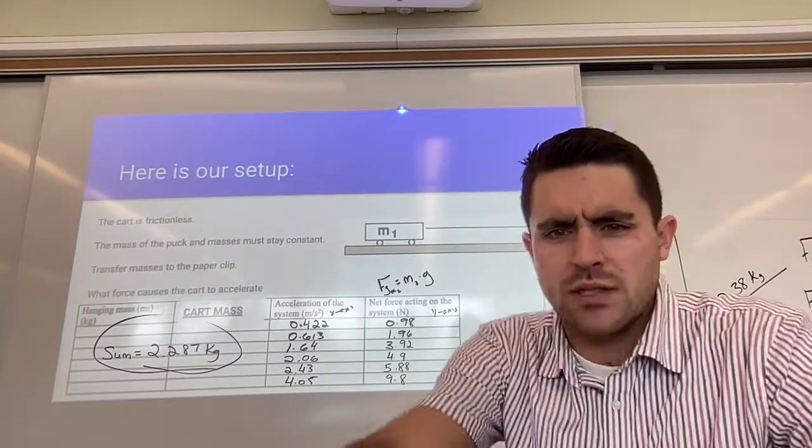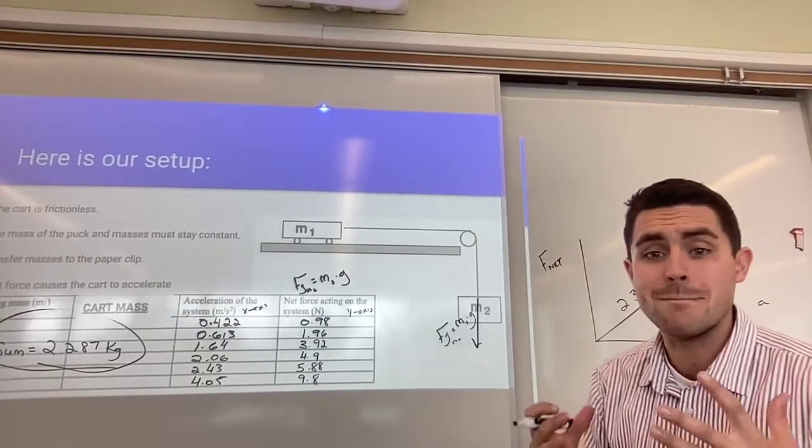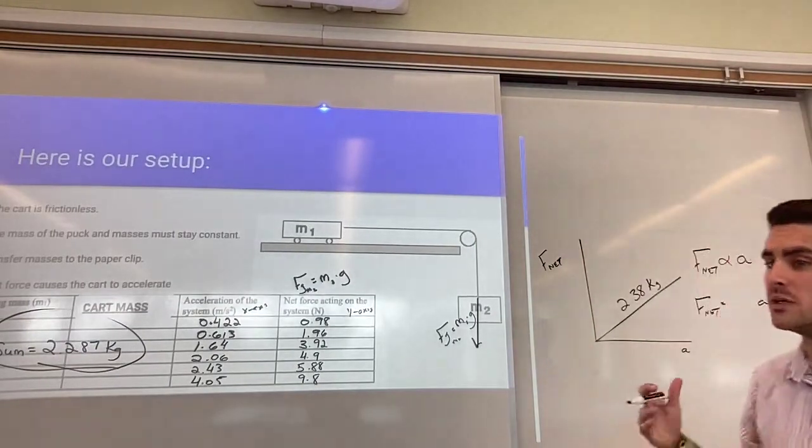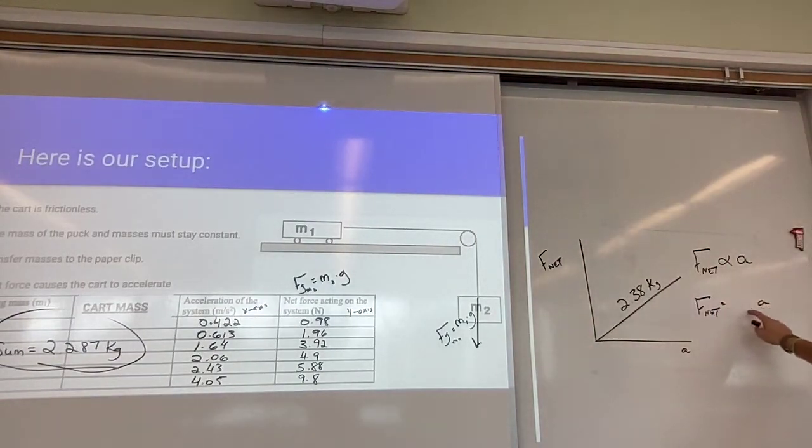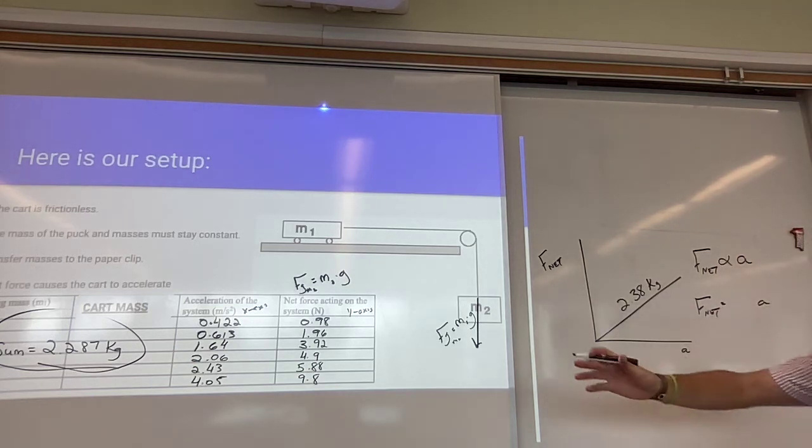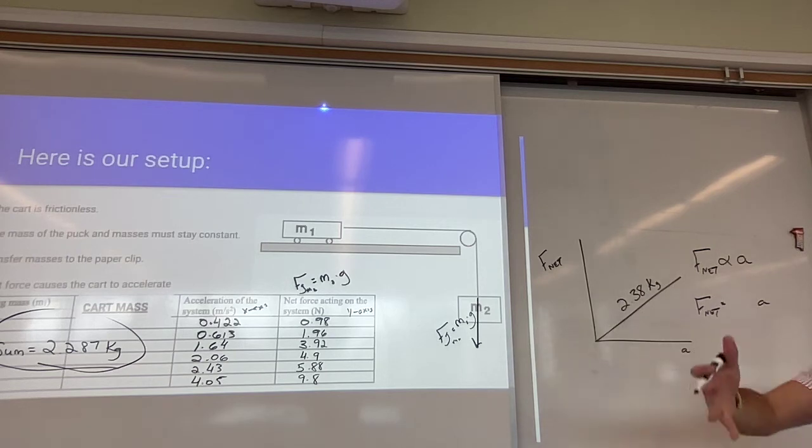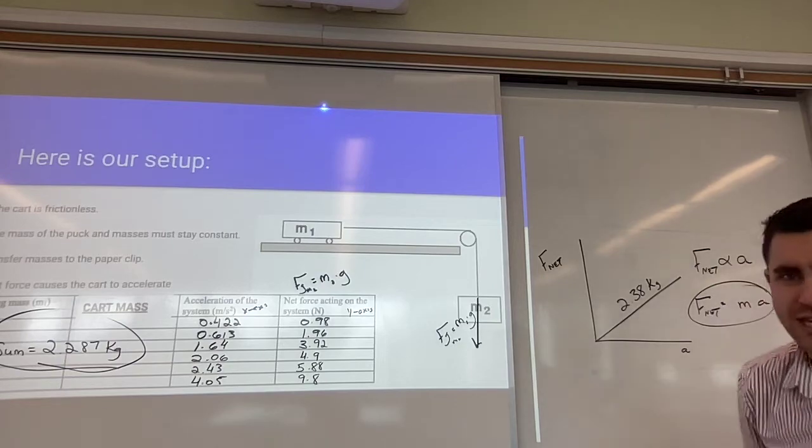So what does this slope tell me? This slope tells me the mass of my system. It tells me how much mass this force was acting on. This force was acting on 2.287 kilograms, but based on my data, it's 2.38. Here's my equation. F net equals ma.